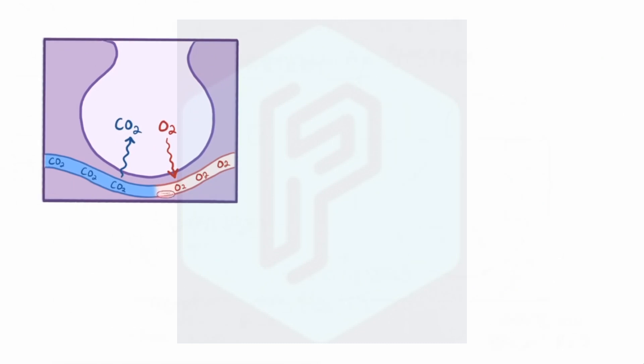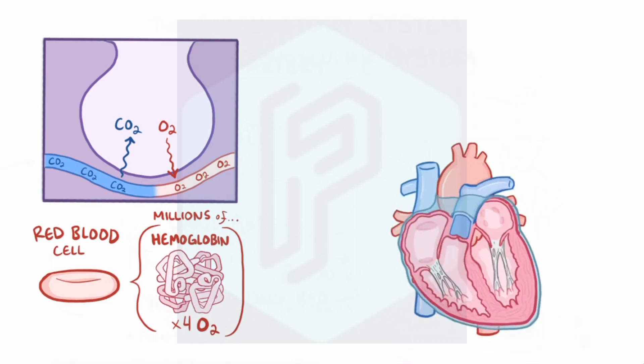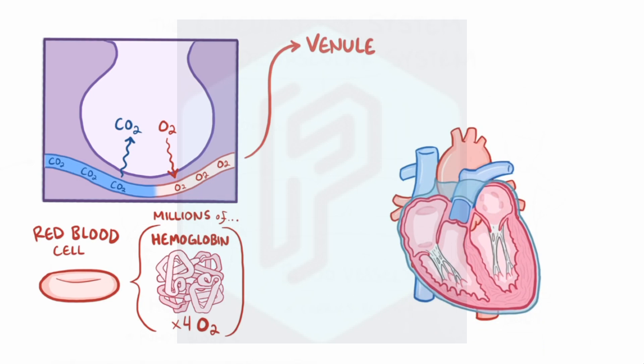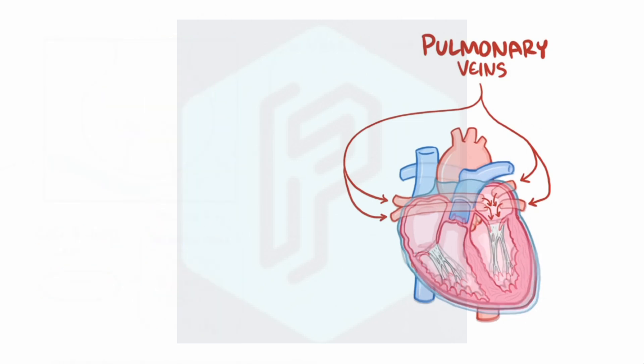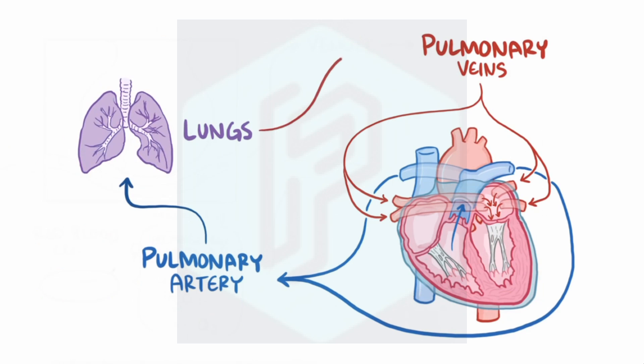Now in the blood, each red blood cell has millions of hemoglobin proteins, and each of those hemoglobins can bind to four oxygen molecules. So each red blood cell can carry millions of oxygen molecules when it's fully loaded. The oxygen-rich blood moves into a venule and then eventually into a pulmonary vein that dumps the blood into the left atrium. This trip from the right ventricle of the heart through the pulmonary artery to the lungs and back to the left atrium of the heart is called the pulmonary circulation.